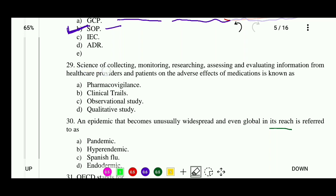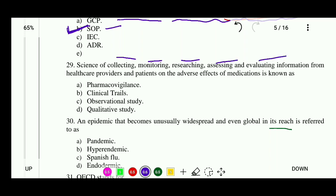Question 29: The science of collecting, monitoring, researching, sensing, and evaluating information from healthcare providers and patients on the adverse effects of medication is known as — options: pharmacovigilance, clinical trials, observational study, or qualitative study. The correct answer is pharmacovigilance.